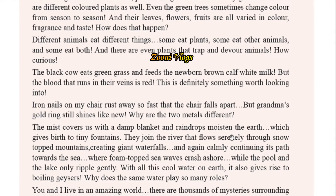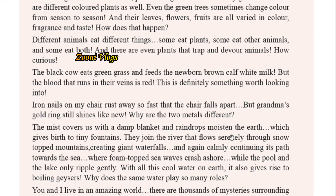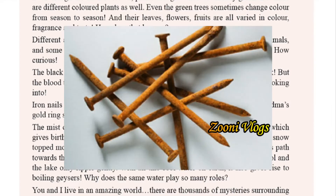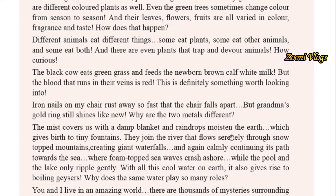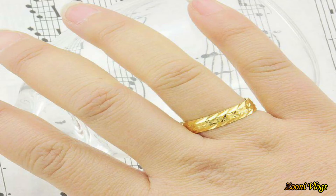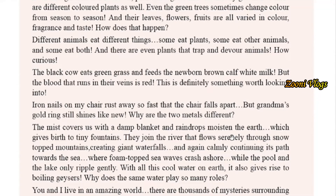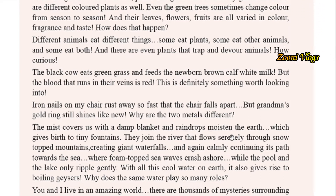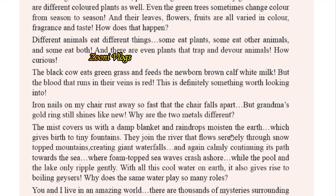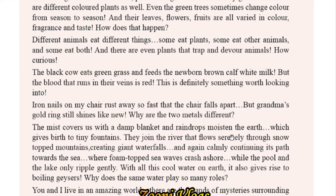Iron nails on a chair rust away so fast that the chair falls apart, but Grandma's gold rings still shine like new. Why are these two metals different? Gold never gets rust but iron nails rust so fast — what is the difference between them?